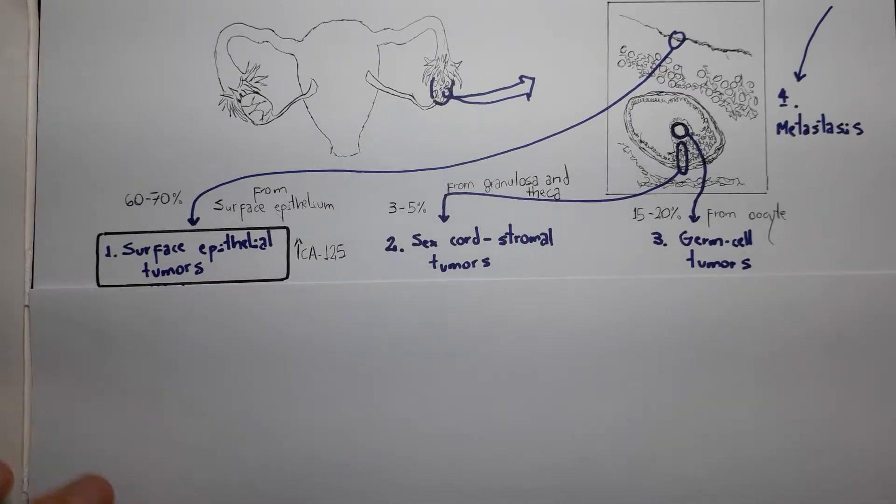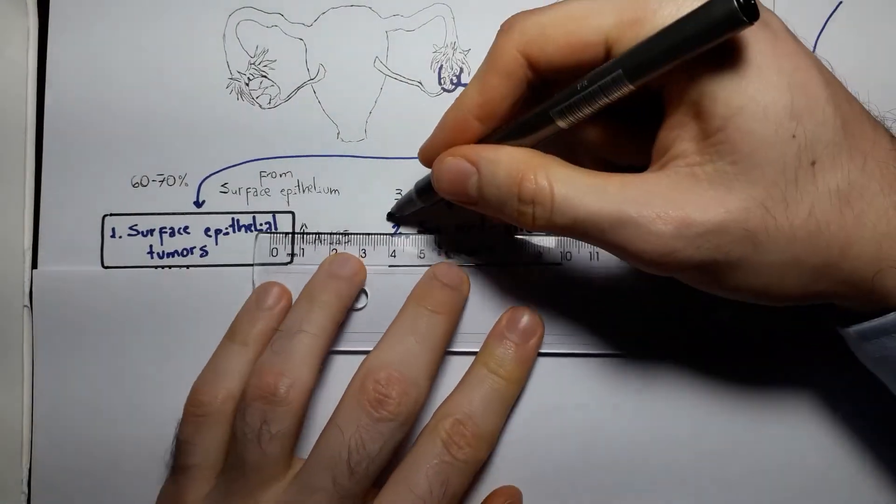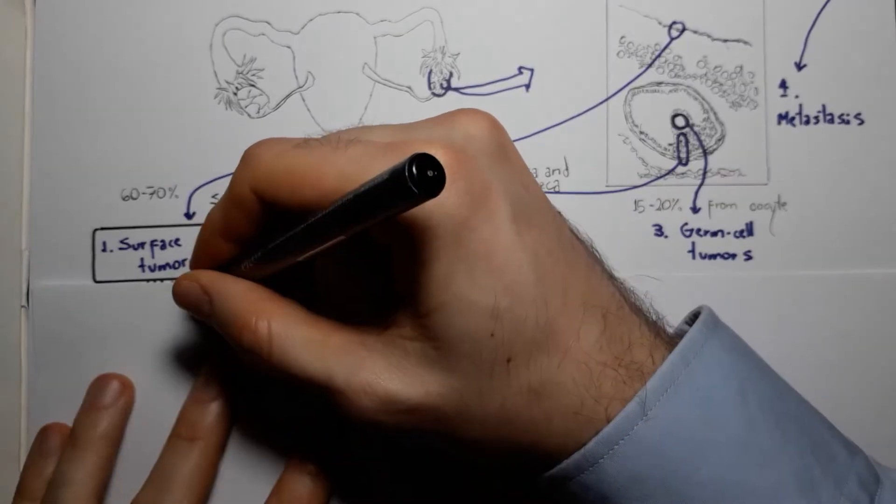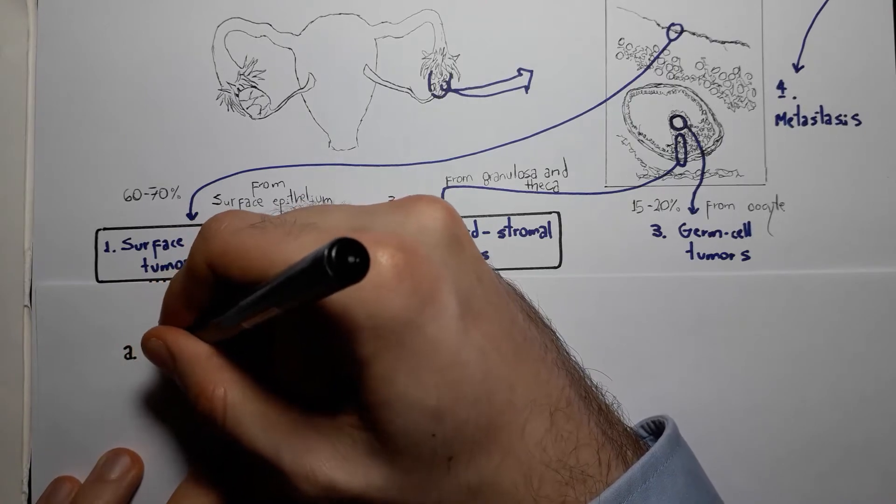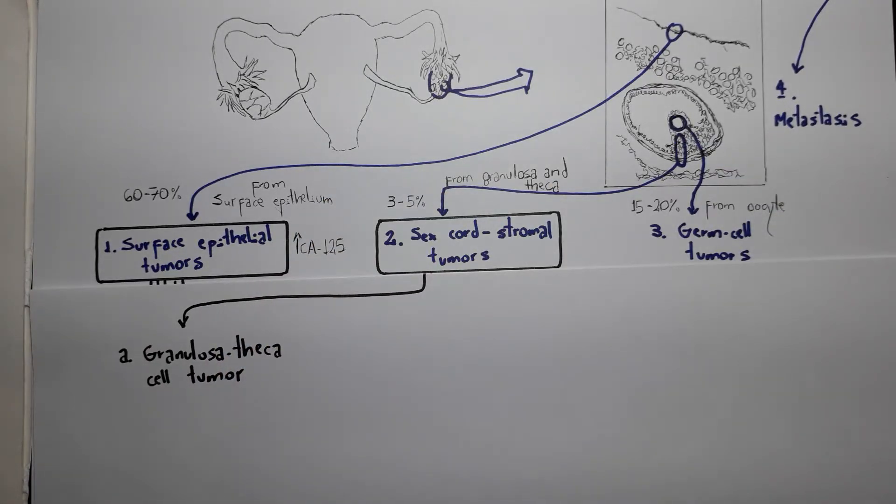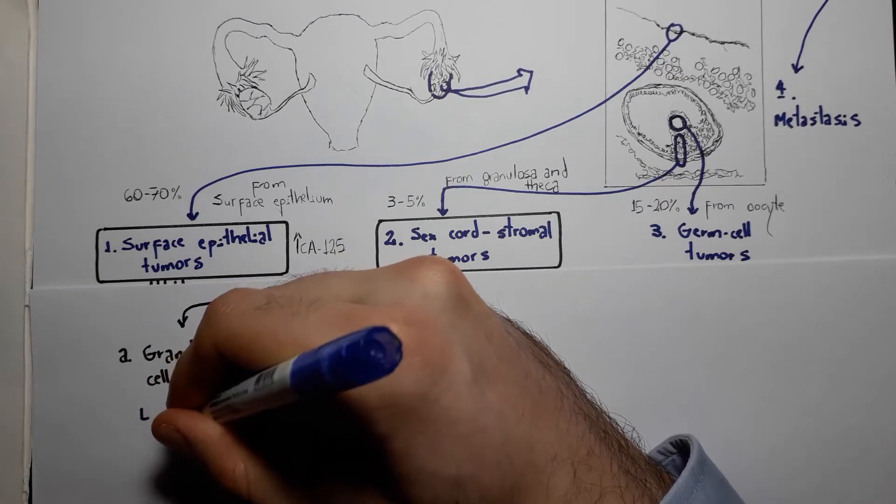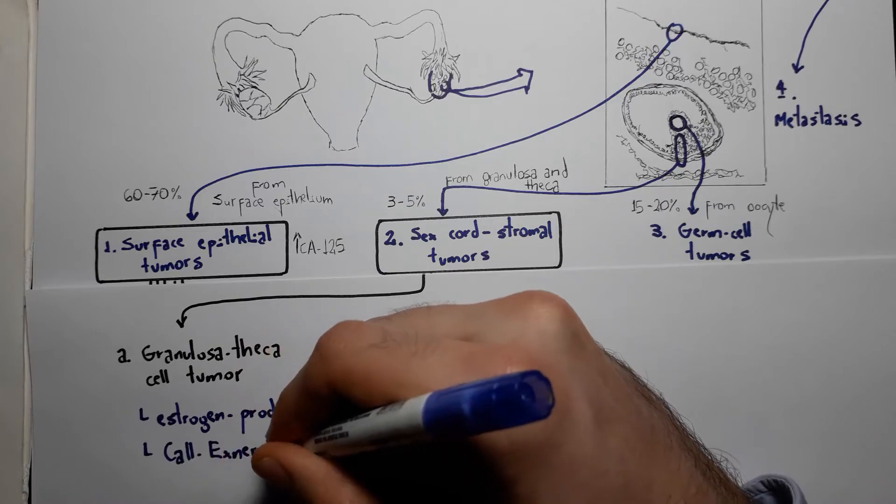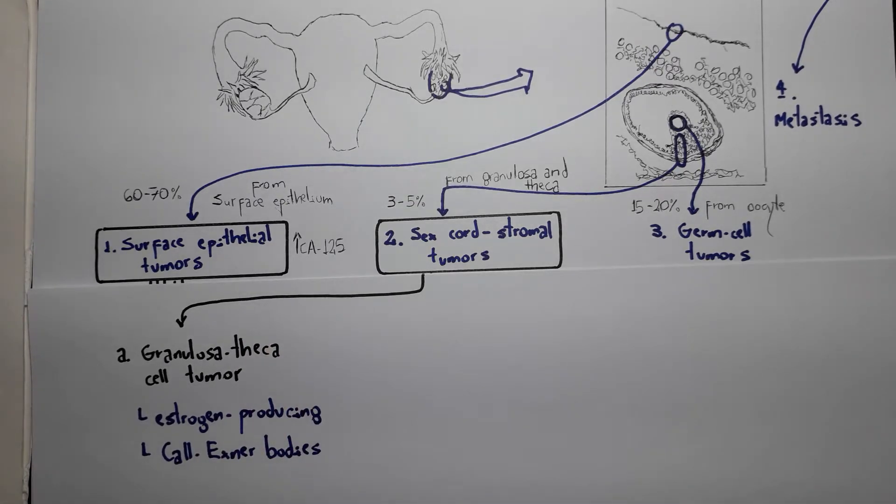Now onwards to the sex cord stromal tumors. These are pretty intuitive. You can have tumors arising from the sex cord cells, such as a granulosa-theca cell tumor, which produces estrogens and can cause precocious puberty in young girls, metrorrhagia in fertile women, or postmenopausal bleeding. It's often characterized by Call-Exner bodies. You could remember: Call-Exner sounds like call-estrogen bodies, meaning it's an estrogen-producing tumor arising from the granulosa and theca cells, working like a normal ovary.